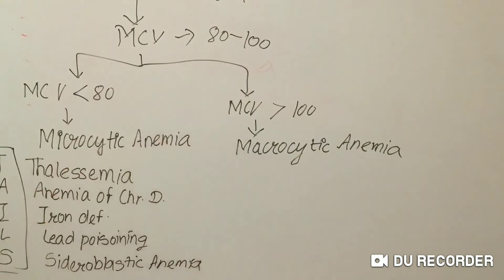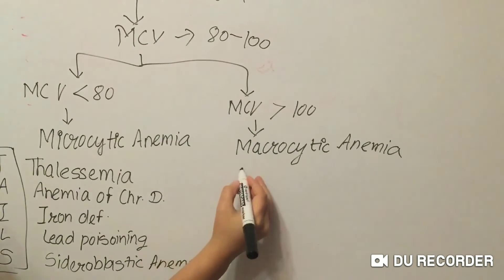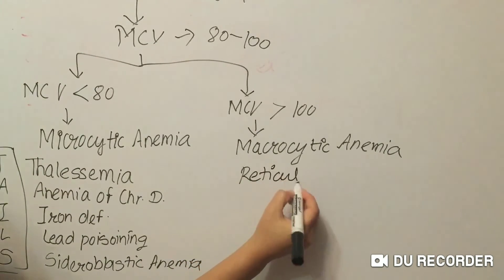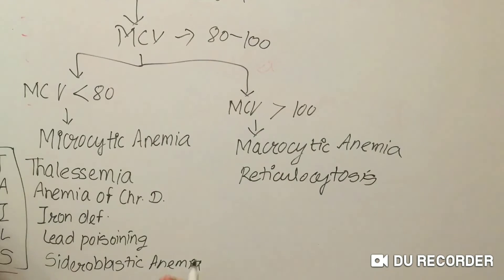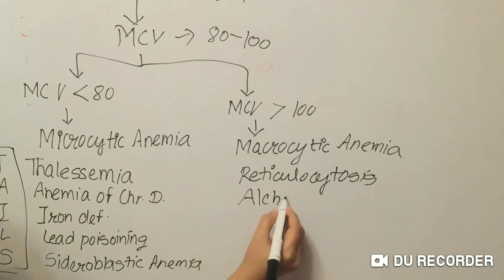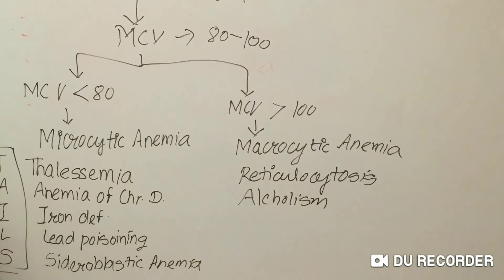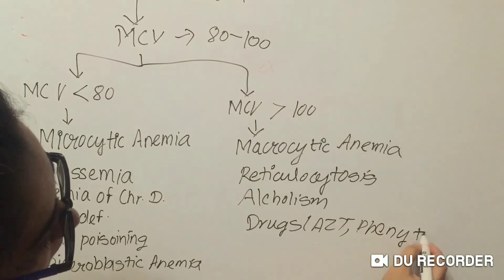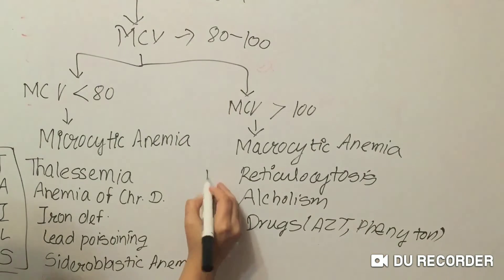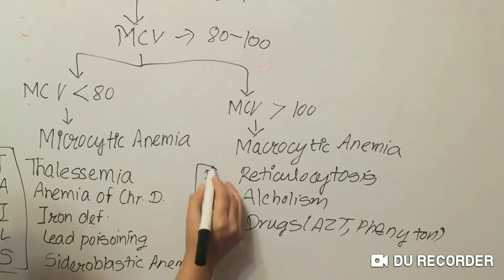Next, within macrocytic anemia, we also include reticulocytosis, also known as acute hemolysis; second is alcoholism; and third is drugs like AZT or phenytoin. You can remember this by the mnemonic RAD.